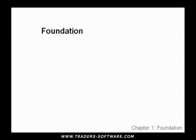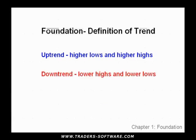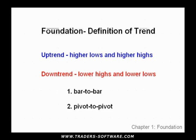The foundation of this course is built on the classical definition of trend. An uptrend is defined as a series of higher lows and higher highs, and a downtrend is defined as a series of lower highs and lower lows. This pertains to both a bar-to-bar scenario and a pivot-to-pivot scenario. I know you think this definition is very simple, but believe me, we're going to get a lot of mileage out of this.